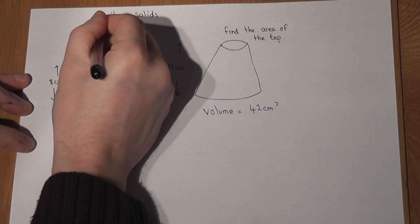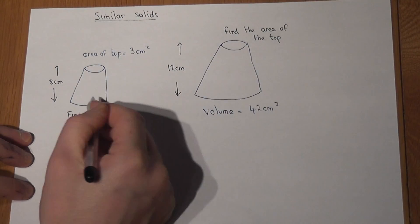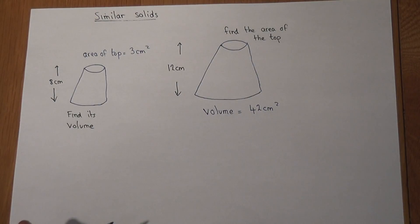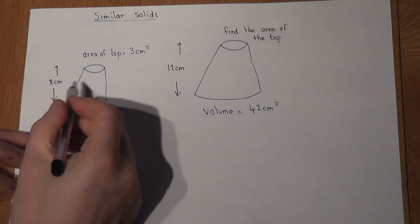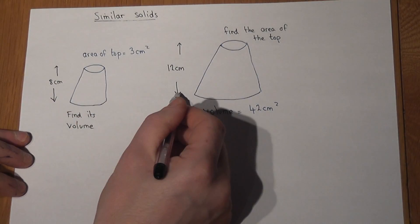In other words, this one is an enlargement of this one and vice versa. What we can see is we're given two heights: a height of 8 and a height of 12.